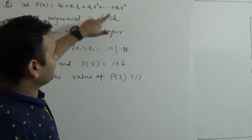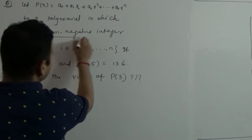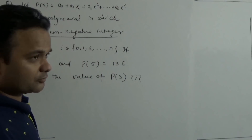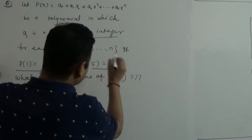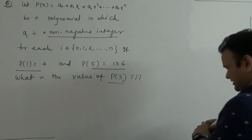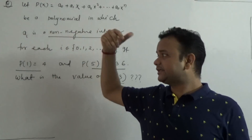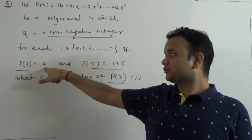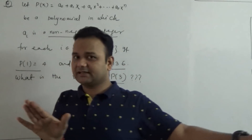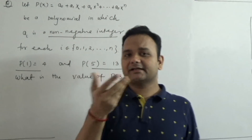Let T(x) be the collection of polynomials where the A_i coefficients are non-negative integers — this is important. If P(1) equals 4 and P(5) equals 136, then what is the value of P(3)? The coefficients are non-negative integers, and since P(1)=4 and P(5)=136 are given, the polynomial is non-constant, meaning degree n is greater than or equal to 1.